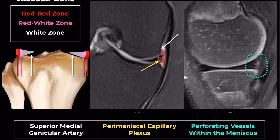Historically, tears in the inner two-thirds of the meniscus were often treated with partial meniscectomy. However, the paradigm has shifted towards more aggressive meniscus preservation, especially targeting the red-white and white zones. Recent research indicates that younger adults might possess a more robust blood supply to the meniscus than older cadaveric specimens.